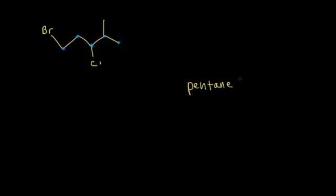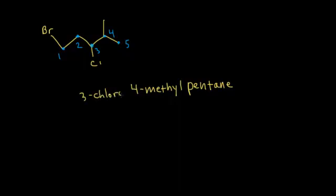Next, I figure out which side to begin my numbering. If I start from the left, that gives this bromine a one. If I start from the right, that gives the alkyl group a two. So it makes sense to start from the left: one, two, three, four, five. I have a methyl group at carbon four, so 4-methylpentane. I have a bromine at one and a chlorine at three. So the full name is 1-bromo-3-chloro-4-methylpentane.